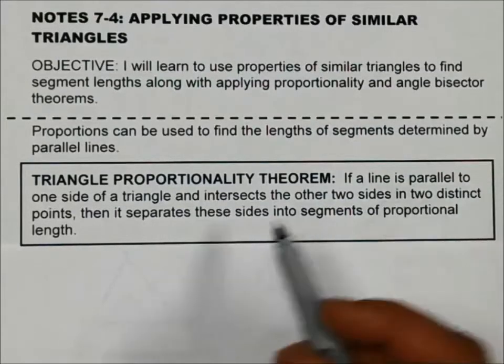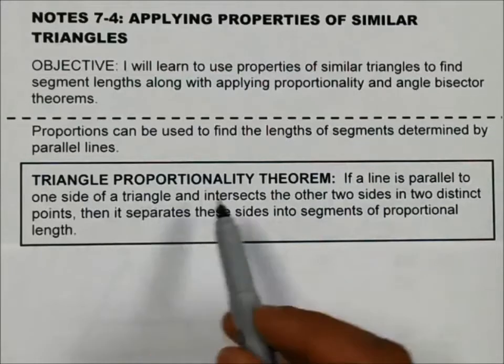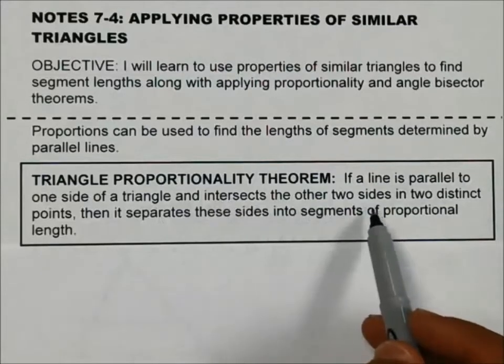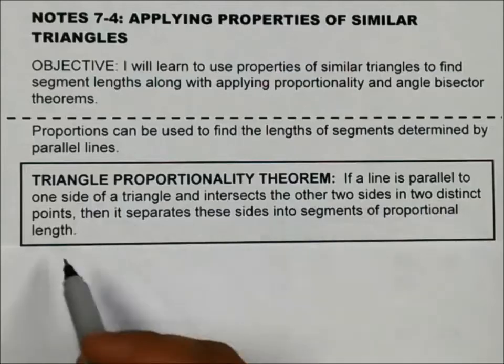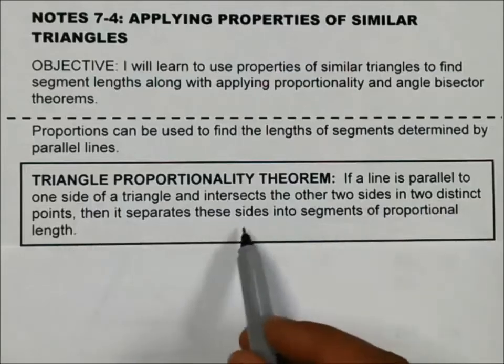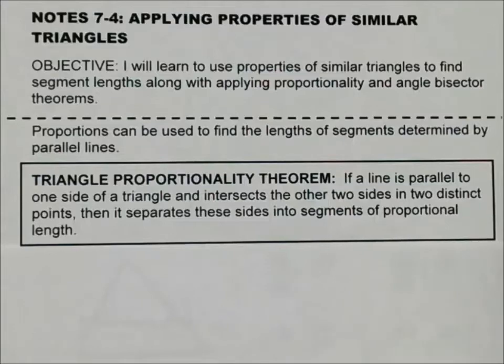The Triangle Proportionality Theorem says that if a line is parallel to one side of a triangle, and it intersects the other two sides in two distinct points, then it separates these sides into segments that we can use proportions on.